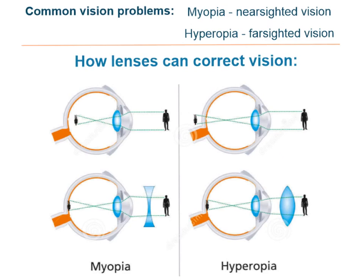Hyperopia can be corrected by use of a converging lens. You can see here how the converging lens will enable the image to be focused on the retina where it should be.